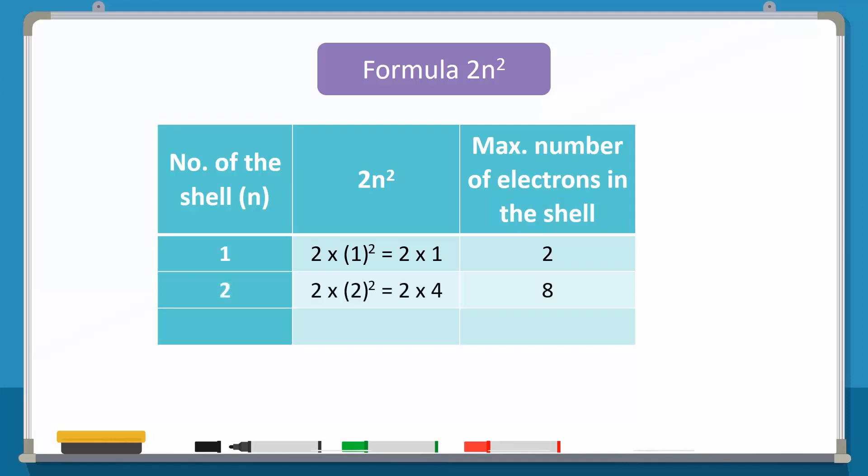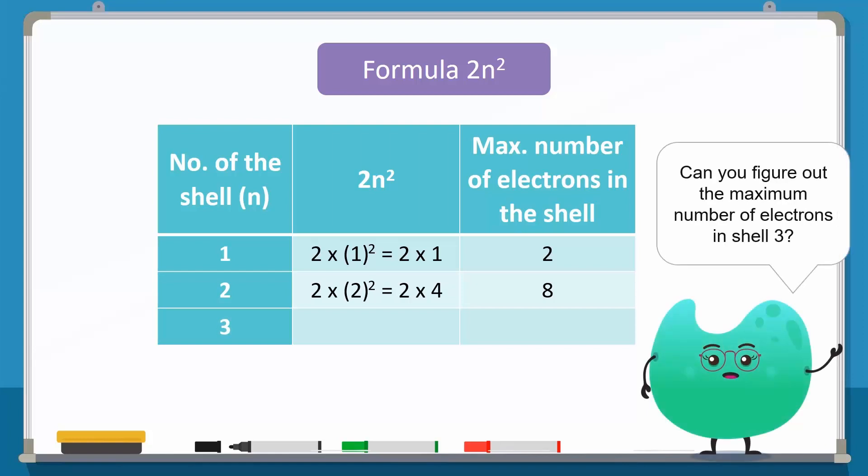For shell 2, n is equal to 2 and the maximum number of electrons in shell 2 is 8. Can you figure out the maximum number of electrons in shell 3?